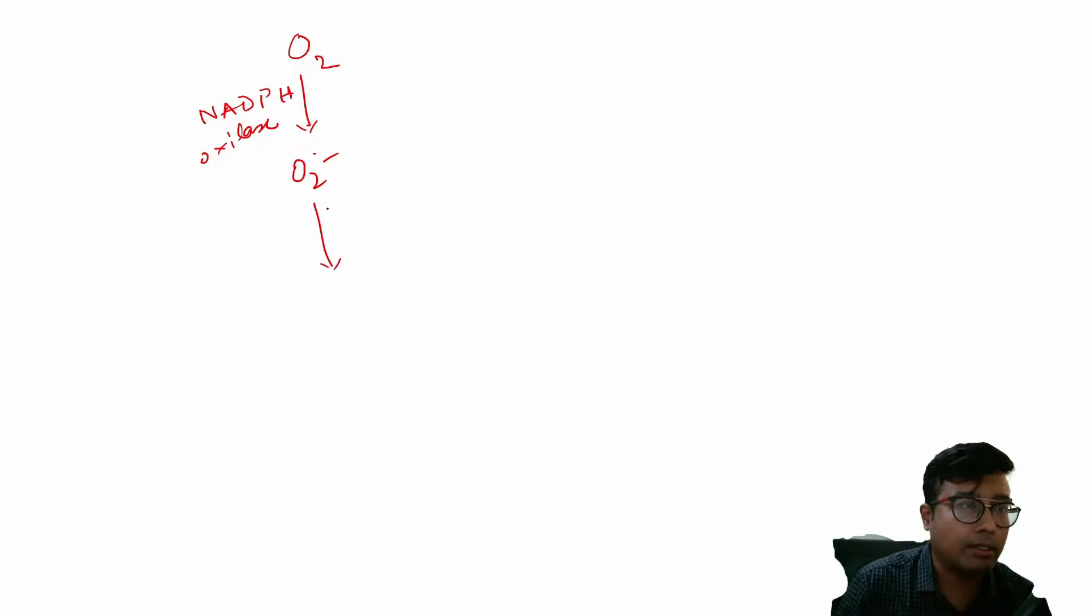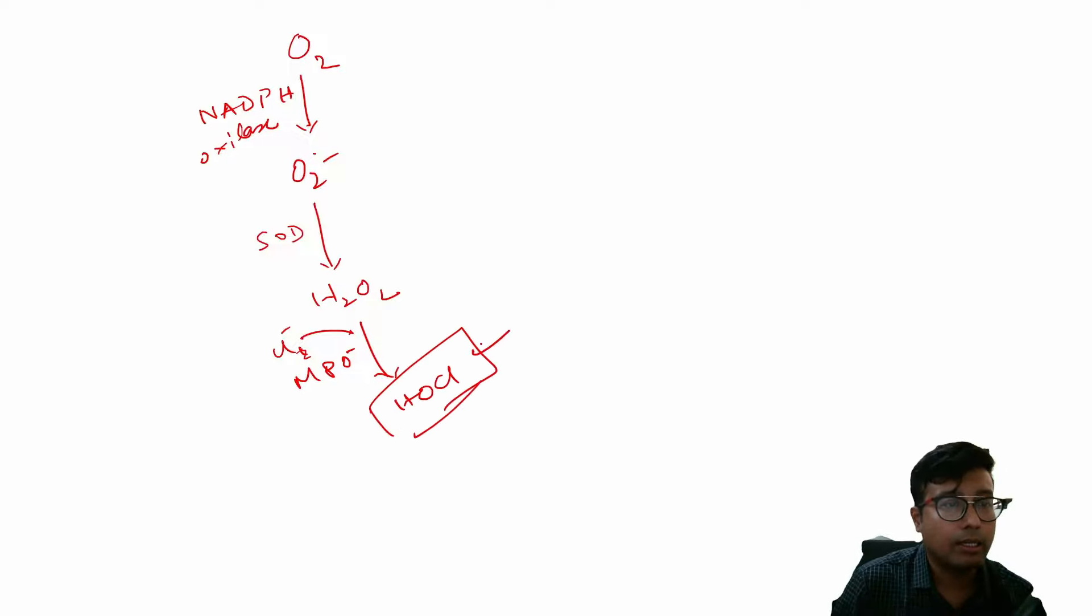Thereafter there is an enzyme that is superoxide dismutase or SOD, it converts superoxide to H2O2 and thereafter it is acted upon by an enzyme that is myeloperoxidase or MPO. A chloride ion comes and it is converted to HOCl or bleach. This HOCl is the predominant compound that actually attacks and kills the bacteria.